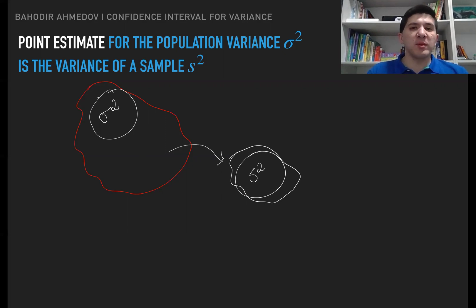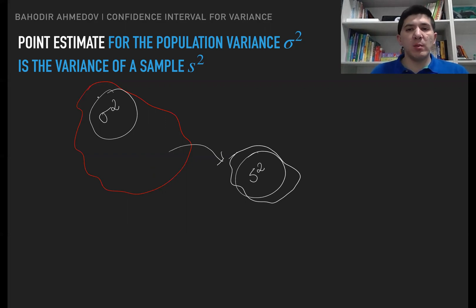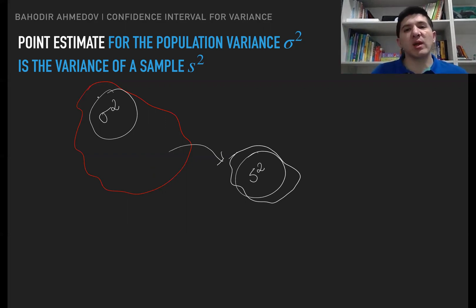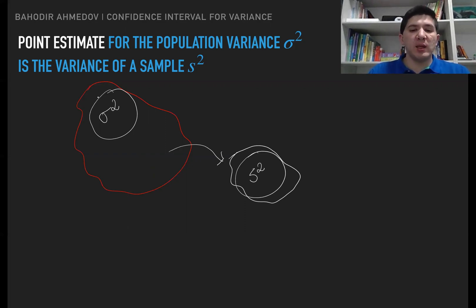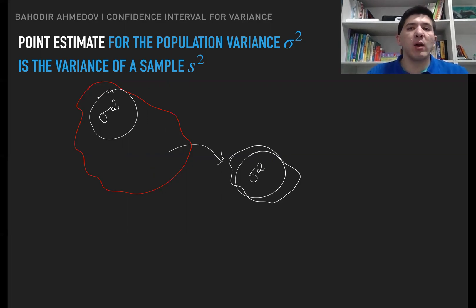Estimating the population variance with just one number is not a good way to estimate it. We would probably have to construct an interval around the sample variance, and it appears we are going to do this in a slightly different form than before.